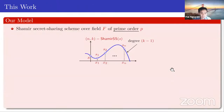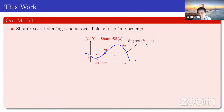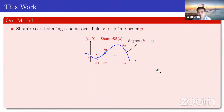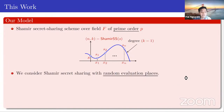The model uses Shamir secret sharing with random evaluation places chosen uniformly at random. The leakage model is physical bit leakage: all shares are stored in their binary representations. For example, if the field size is 31 and the share is 6, it is stored as 00110; if the share is 19, it is stored as 10011. The leakage function may learn physical bits of the share, for instance the least significant bit of share 19 is 1.